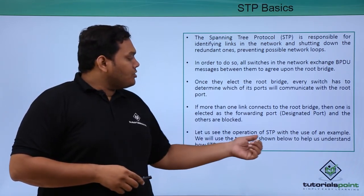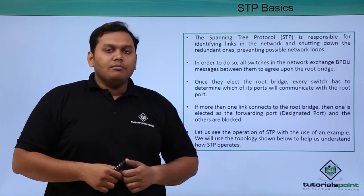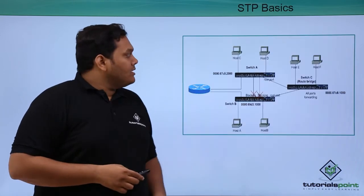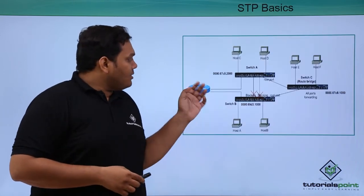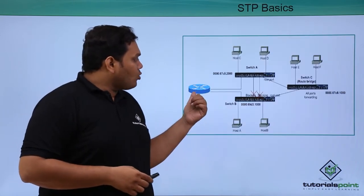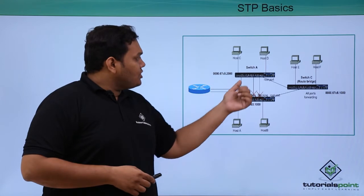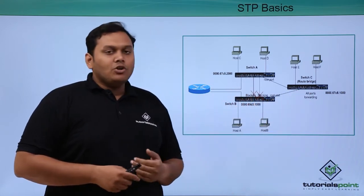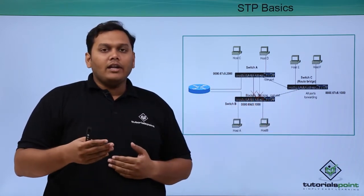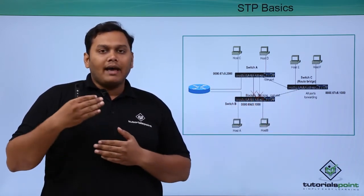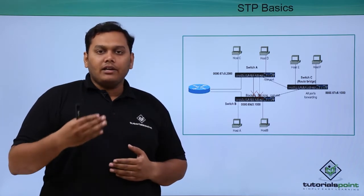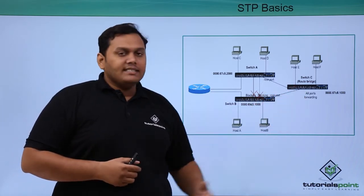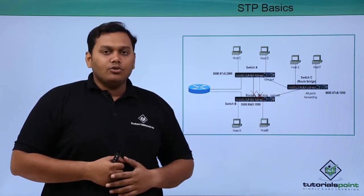Let us see the operation of STP using a simple example. This is a router with switch A, B, and C. Based on the MAC address or the priority value, switch C is elected as the root bridge.